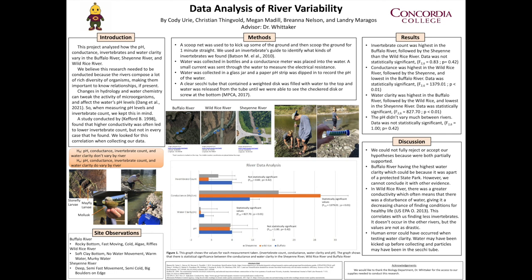We started by collecting written observations of the rivers that we went to and recorded the habitat and condition of the land that was surrounding the river. We kicked up the ground to create debris, and then a scoop net was used for one minute straight. We used an invertebrates guide to identify what kind of invertebrates we found. Water was collected in bottles, and a conductance meter was placed into the water.